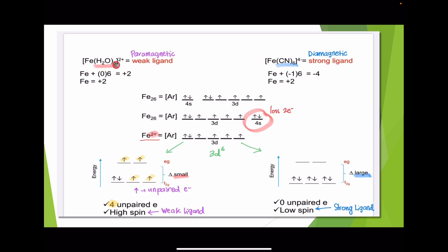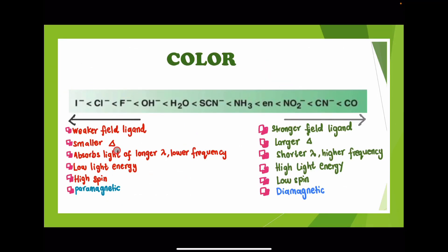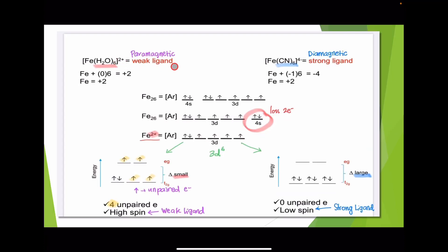Here is the weak field ligand. To identify whether a ligand is weak or strong, you must remember these trends. For the halogens — iodine, chlorine, fluorine — these are weaker field ligands compared to the cyanide ion and the carbonyl ligand, which are strong field ligands. Strong field ligands tend to form diamagnetic complexes, and weak field ligands tend to form paramagnetic complexes.